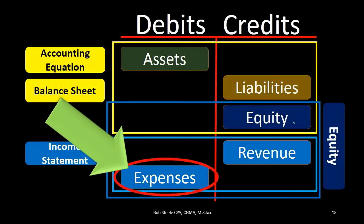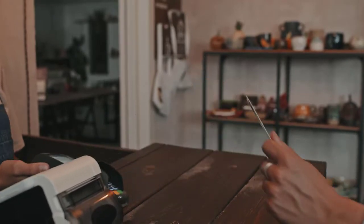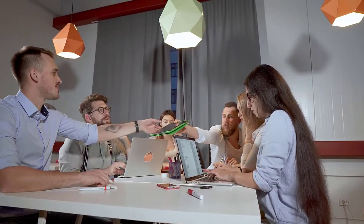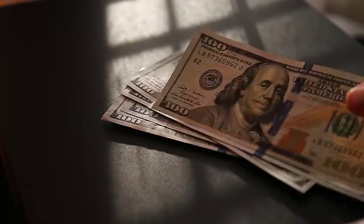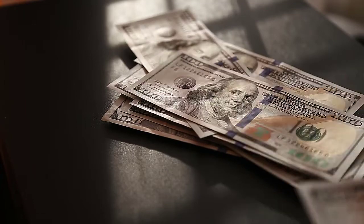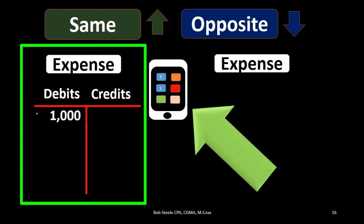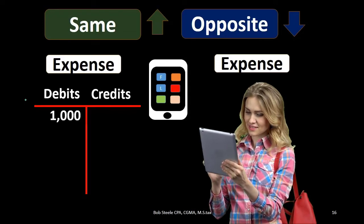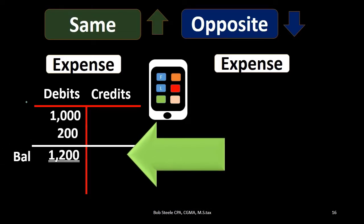Now we'll look at expenses. Remember that expenses are a component of equity, and like revenue, they have the special component that they typically only go up. If we pay utilities expense or wages expense, the utility company does not pay us — we pay them. Employees don't pay us — we pay them. Expenses typically only go up, bringing net income down and total equity down. Applying our rule: if we have a $1,000 debit balance for a phone bill and want to increase it, we do the same thing — another debit — increasing the balance up to $1,200.